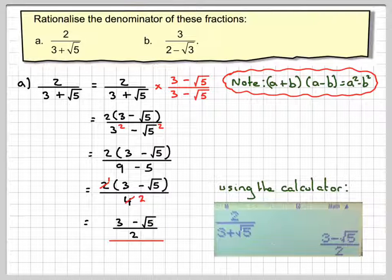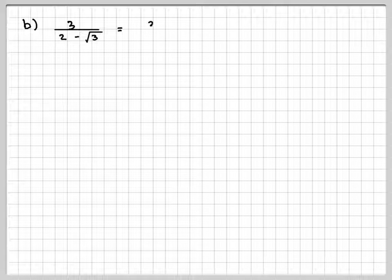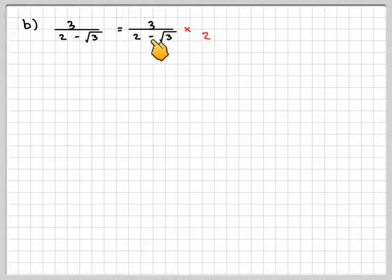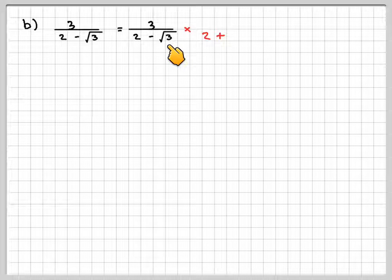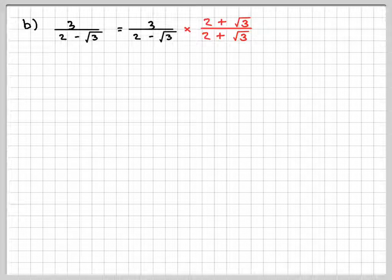Okay, looking at the next one. So I've got 3, 2 minus root 3. So we're going to multiply by 2. Now it's a minus here this time, so we need to change that to a plus, and then we need to put in root 3. Now because we've done it to the denominator, we must also do it to the numerator.